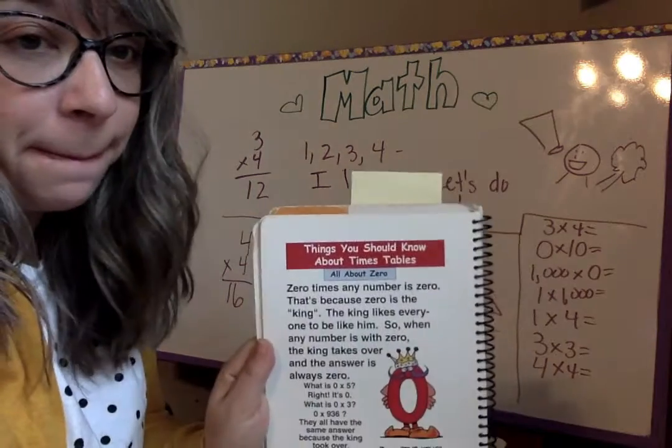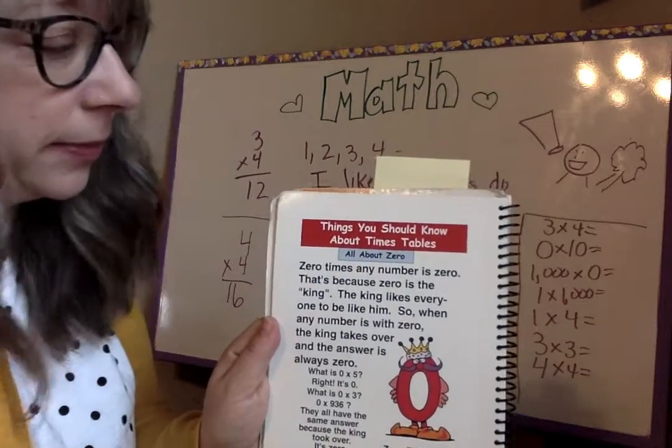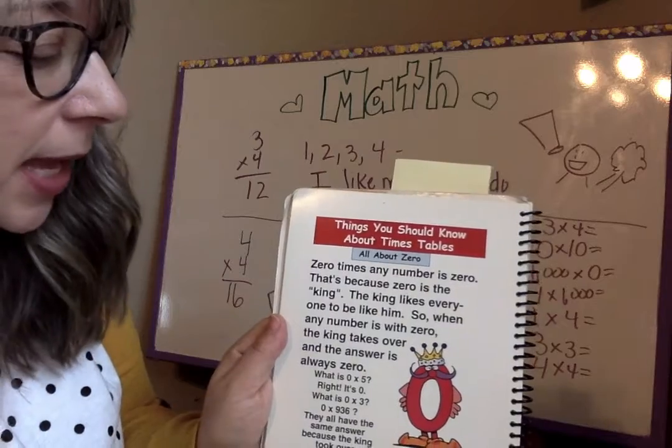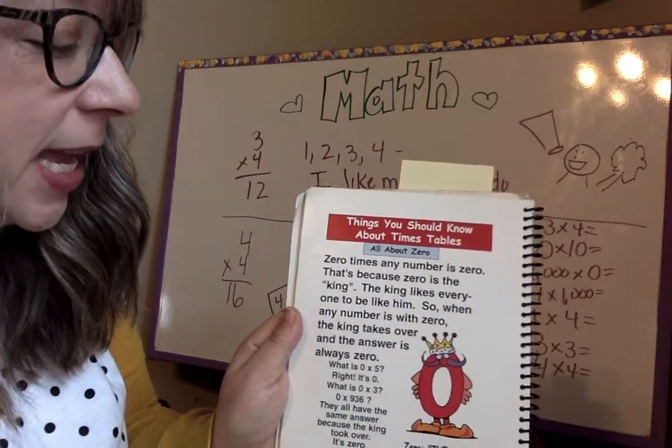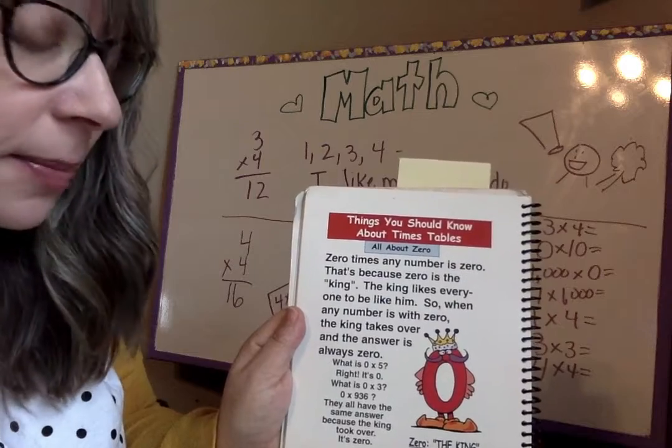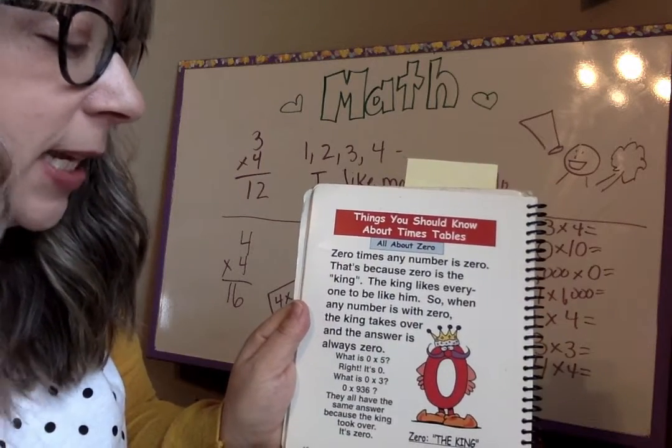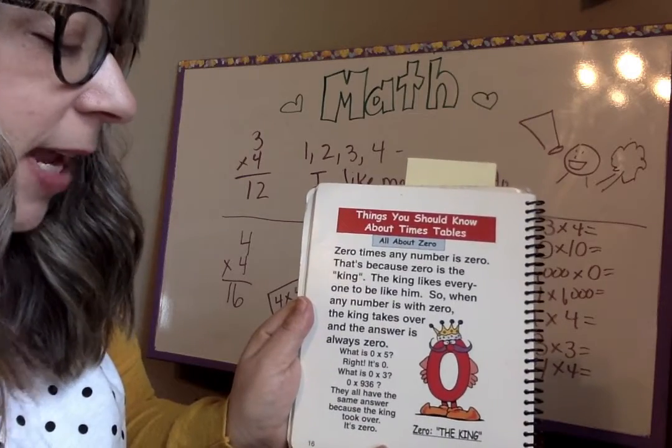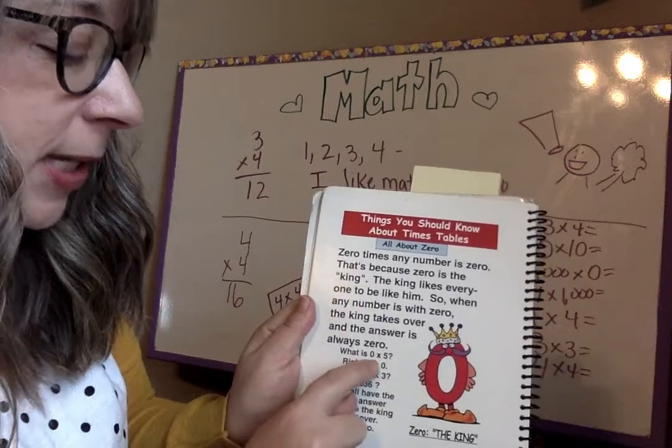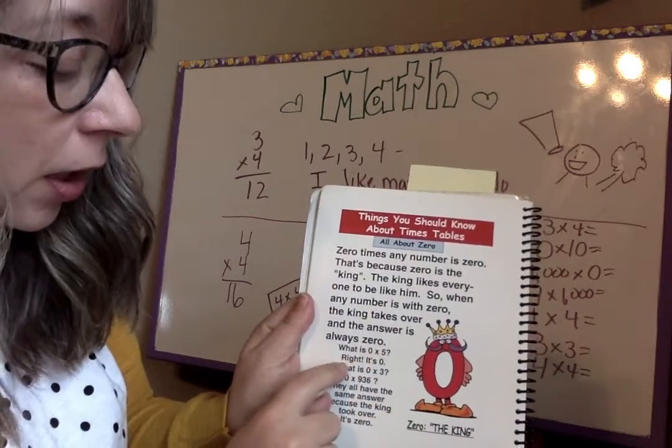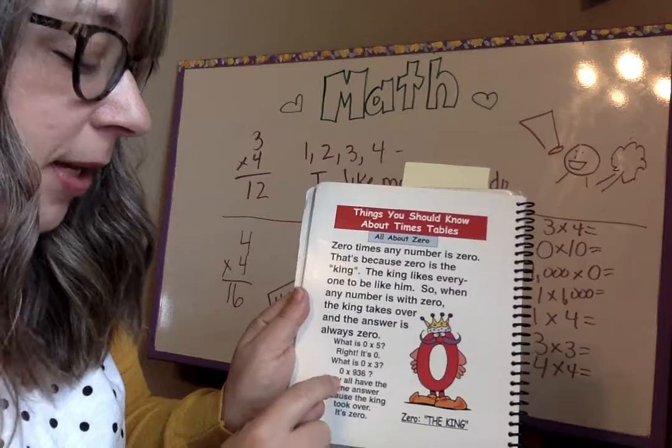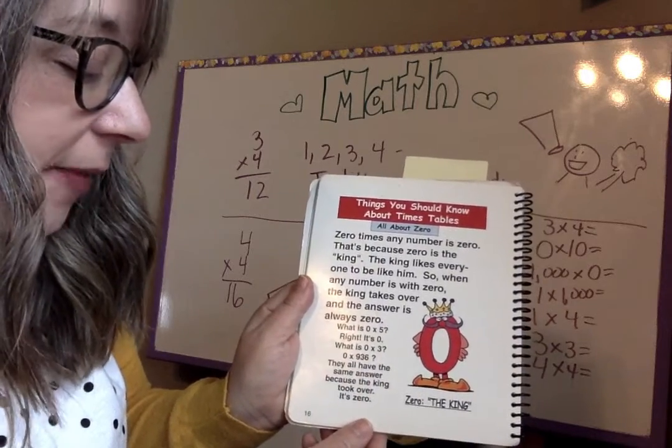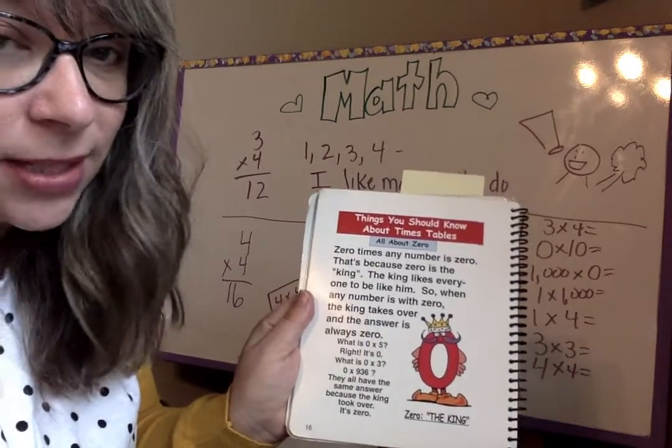So I'm going to quickly go over the zero. So zero times any number is zero. That's because zero is the king. The king likes everyone to be like him. So when any number is with zero, the king takes over and the answer is always zero. What is zero times five? Right, it's zero. What is zero times three? Zero times nine hundred thirty-six? Zero. They all have the same answer because the king takes over. Zero.